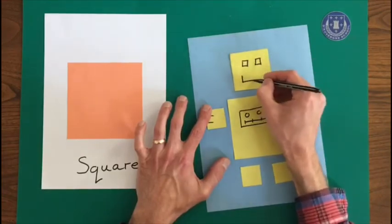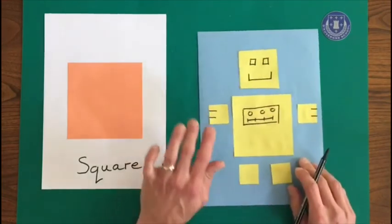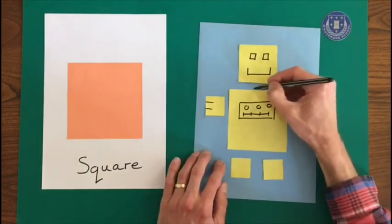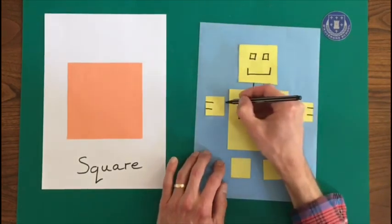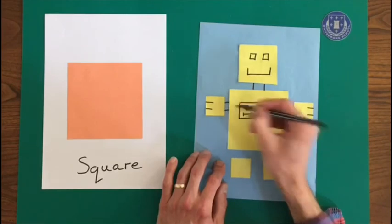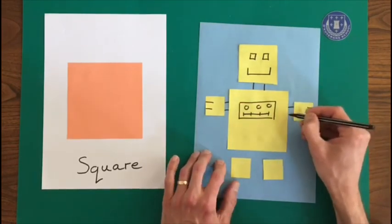And then robot face. Nice smile. Oh and we'll join up his squares. So his wires, so his wires can get to where they need to be.